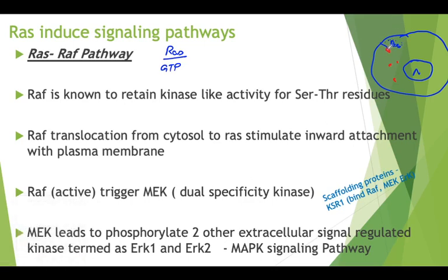Upon binding with RAS, the RAF complex becomes phosphorylated. This phosphorylated RAF is brought closer to the plasma membrane, either of the cell or of cytoplasmic organelles. The RAS-RAF complex formation then needs to activate a range of other proteins.